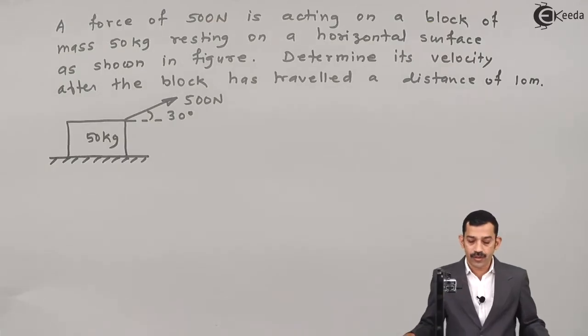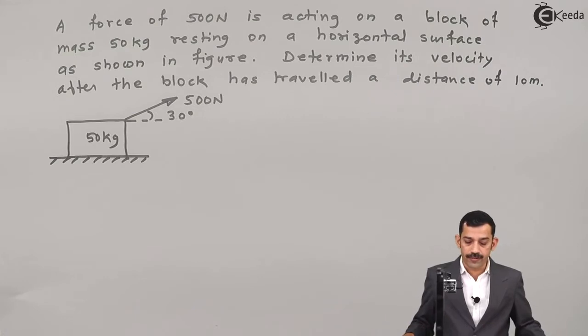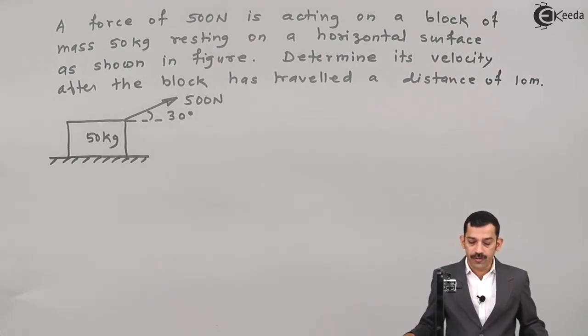Hi friends, to solve a problem on work-energy principle. What is given in this problem? A force of 500 Newton is acting on a block of mass 50 kg resting on a horizontal surface as shown in the figure.